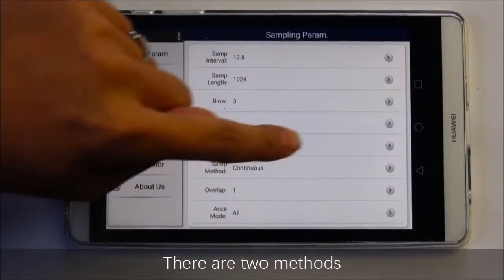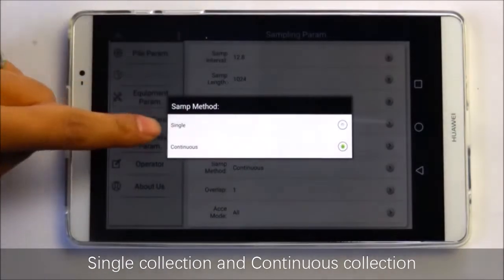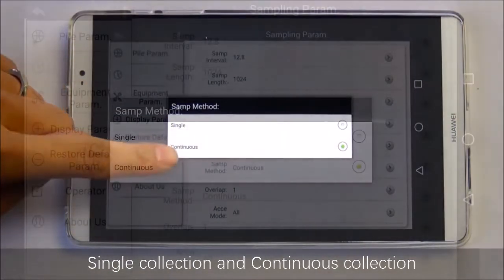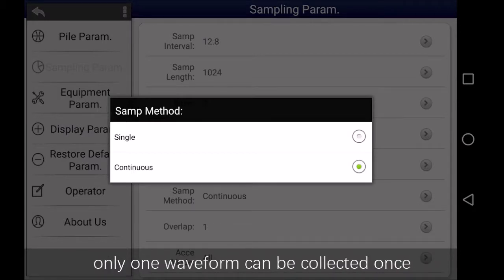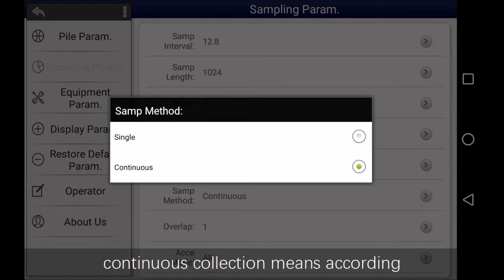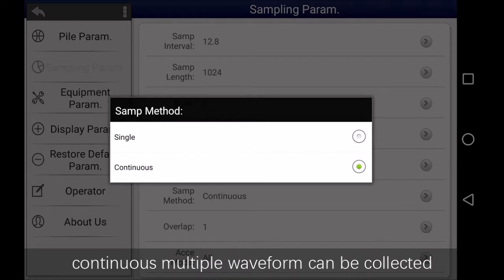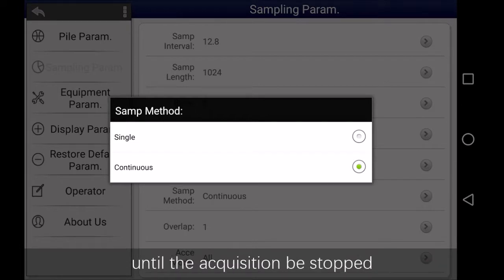Sampling method: There are two methods, single collection and continuous collection. Single collection means, according to the parameter setting, only one waveform can be collected once. Continuous collection means, according to the same parameter set, continuous multiple waveforms can be collected until the acquisition is stopped.